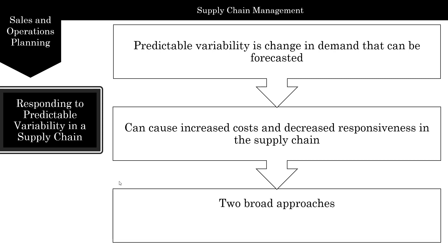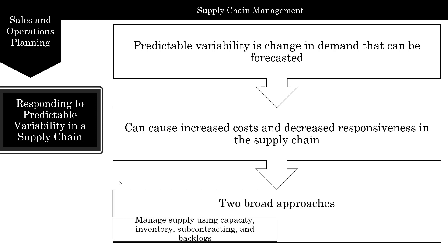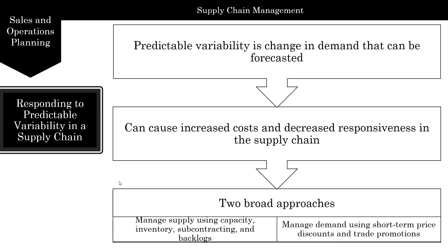There are two broad approaches. You've already seen one: aggregate planning, where we manage supply using capacity, inventory, subcontracting, and backlogs. But we can also manage demand using short-term pricing discounts and trade promotions, and that's what we're going to see in this particular lecture.